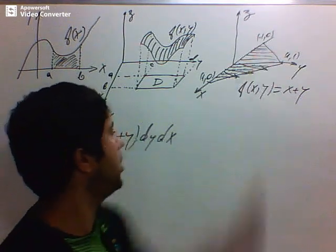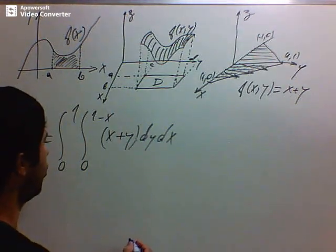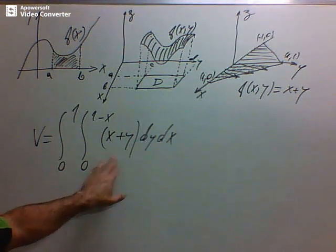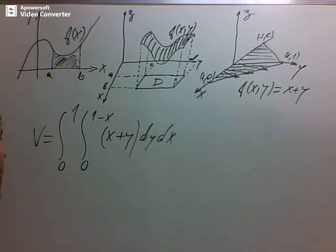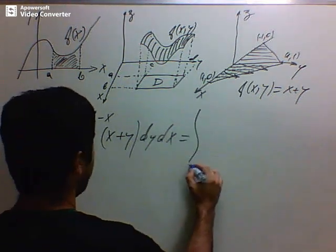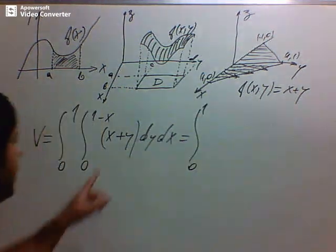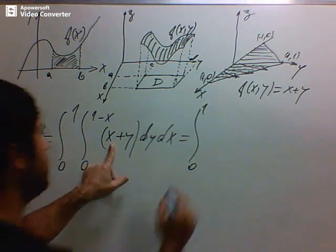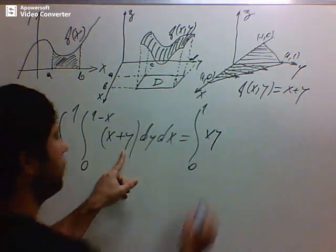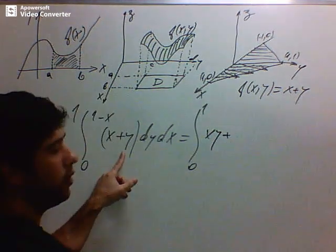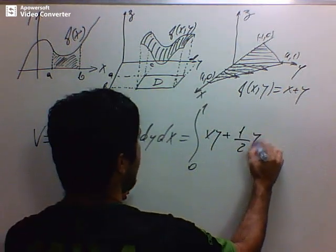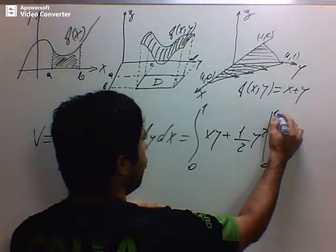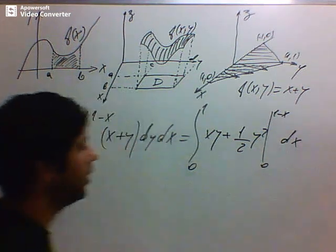To calculate the volume, we integrate in y first. The outer integral is from 0 to 1 in x. Integrating x + y with respect to y gives x·y + (1/2)y², and we evaluate this from 0 to (1−x).